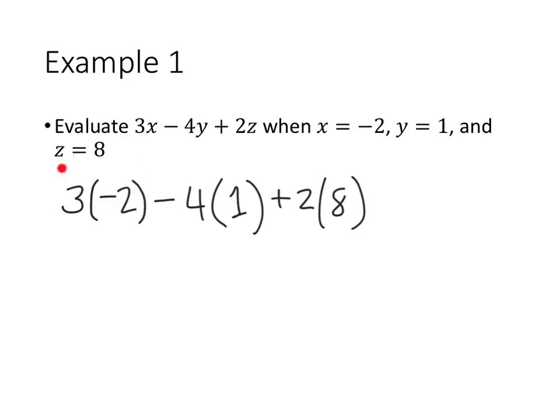3 next to negative 2 means 3 times negative 2, which is negative 6. Then 4 times 1 is 4, and 2 times 8 is 16.